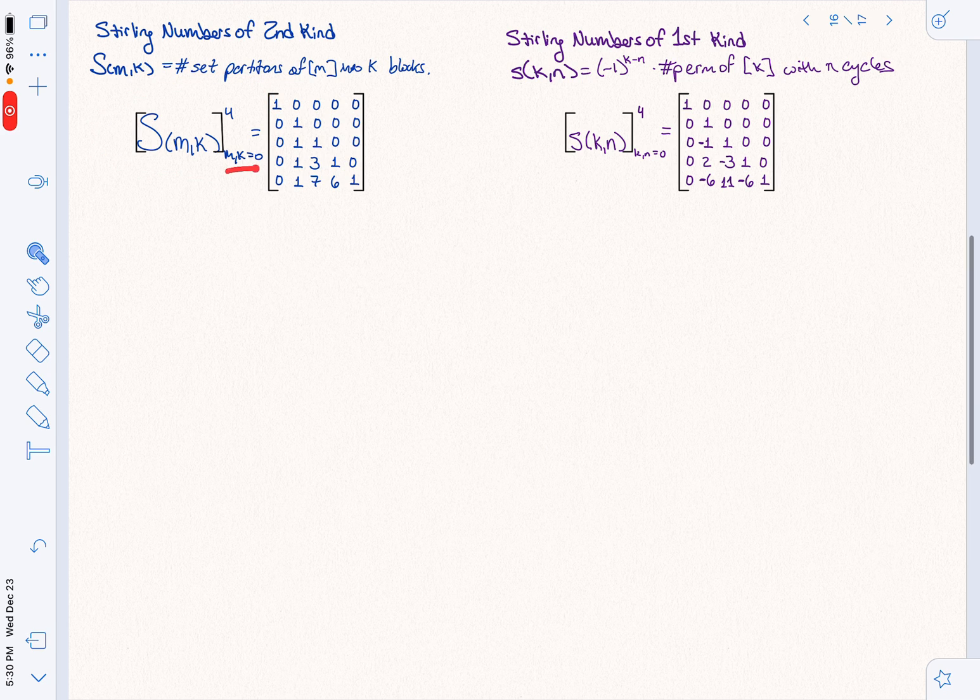So here, notice my indexing set goes from 0 to 4. That means that this entry here, it looks like it's in the fifth row and the fourth column, but my indexing is shifted, so this means that that entry 6 is actually S(4,3), which of course we saw the formula is then 4 choose 2, which is indeed 6.